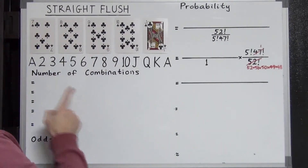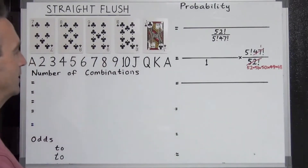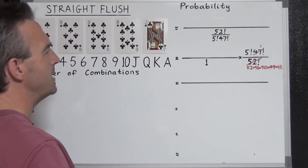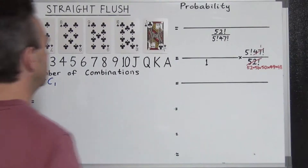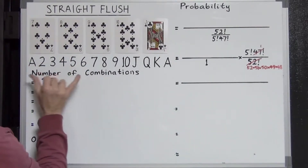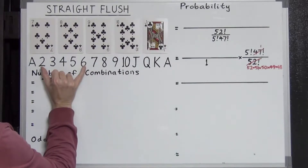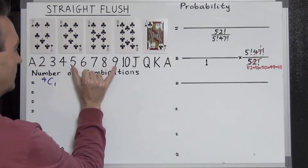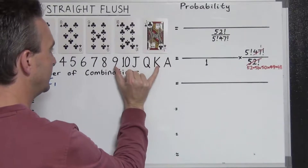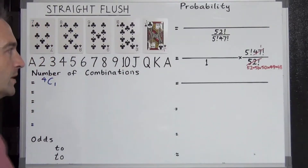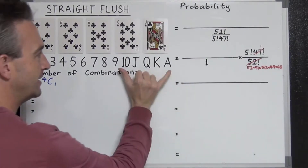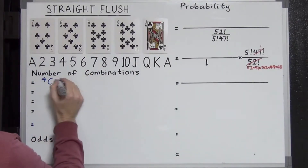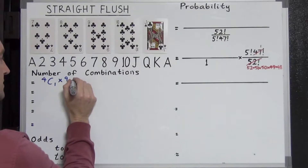So, how many ways can this be done? First, you choose your suit. There are four suits to choose from: 4C1. And now we have to choose the sequence. How many possible consecutive sequences are there? Ace, 2, 3, 4, 5 is one. 2, 3, 4, 5, 6 is another. 3, 4, 5, 6, 7 is another. If we count all these up, we get 10 consecutive sequences. But the 10-to-Ace sequence is a royal flush, not a straight flush, so we omit that — leaving only 9 to choose from: 9C1.